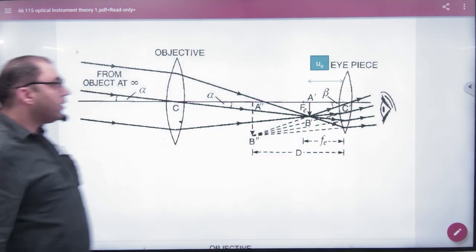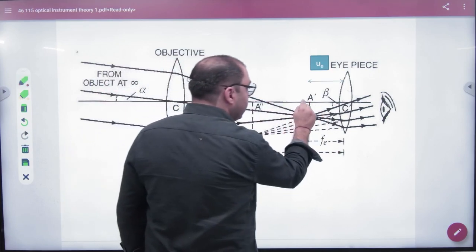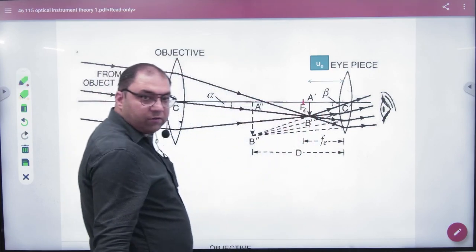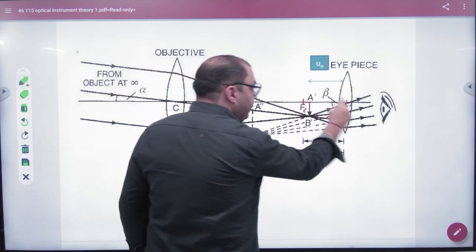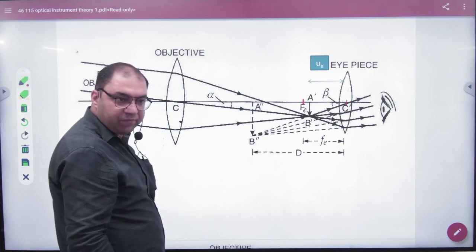But this time, the focal length of this lens is not made up of your image. This is Fe. So where did the image come from? Fe and center. So obviously, what will it be? It will be a virtual image this time, but it will not be in infinity.